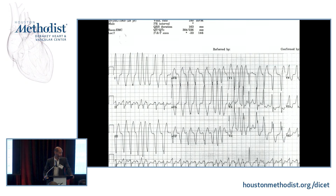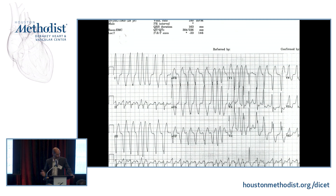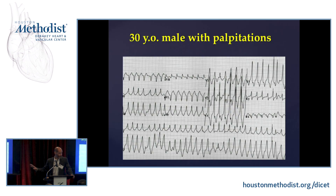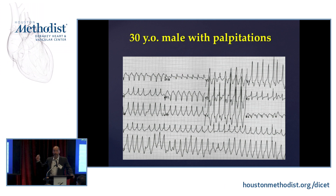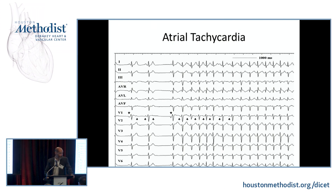Other EKG changes modulated by an accessory pathway: an irregular rhythm with varying degrees of QRS widths should make you think atrial fibrillation with an accessory pathway and intermittent varying degrees of pre-excitation — this will be on your boards. A wide complex tachycardia that is irregularly irregular with varying degrees of QRS widths represents atrial fibrillation with an accessory pathway.